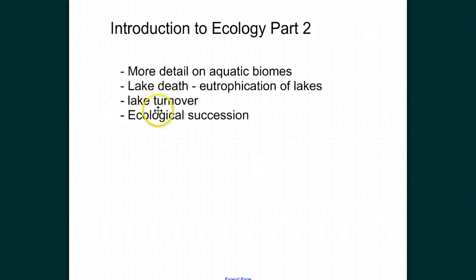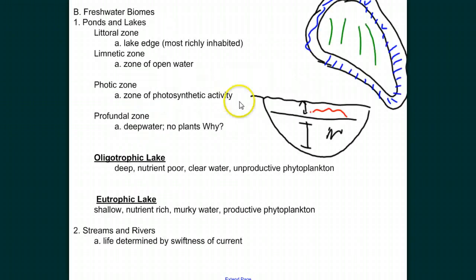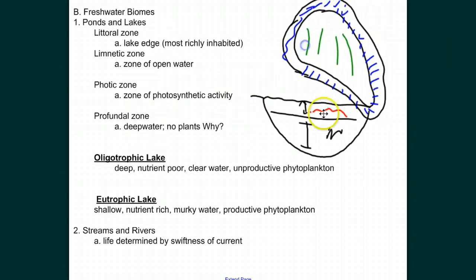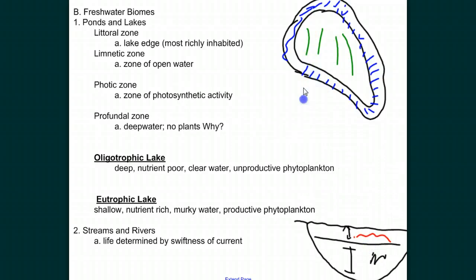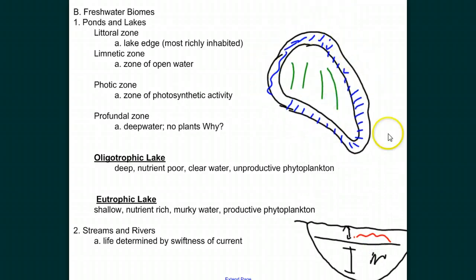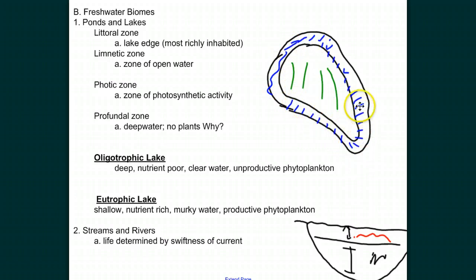Let's look at some more detail on the aquatic biomes, starting with the freshwater biomes. When we look at a lake from up above, all around the edge of the lake is what's called the littoral zone, or the lake edge. This is where most of the life inhabits the lake — there are plants that grow along the edge, and therefore that's where you find most of your plant life and animal life. Out in the open water, in the middle of the lake, would be your limnetic zone, your zone of open water, where you'd have less life, fewer living organisms.